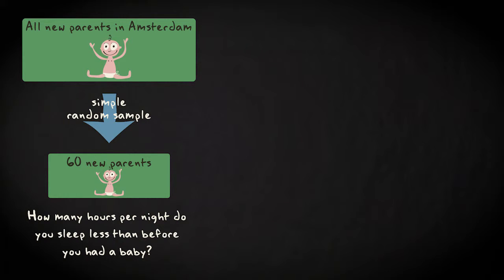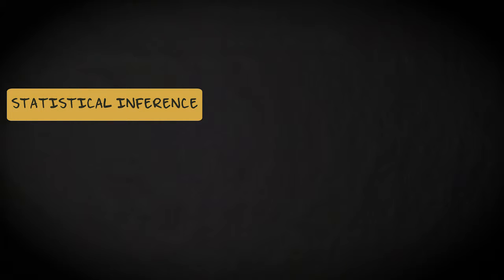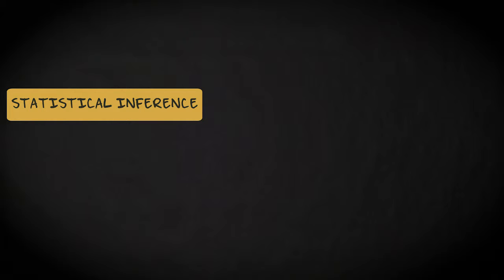In this module I will talk about statistical inference. I will, on the basis of sample information, draw conclusions about the entire population from which the sample was drawn. We can distinguish two types of statistical inference methods. We can estimate population parameters and we can test hypotheses about these parameters. In this module I will talk about the first type of inferential statistics. The second type, hypothesis testing, will be discussed in the next module.